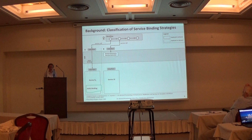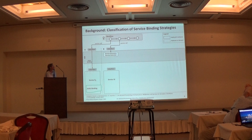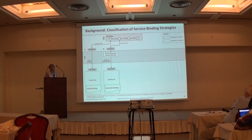The next strategy is called dynamic binding. In this strategy, and for all the following strategies, the service call only contains a description of the functional and non-functional requirements — but no specific endpoint. When receiving a service call, the ESB first has to carry out a service discovery and a service selection to find a suitable service which fulfills the functional and non-functional requirements, and then forwards the service call to the endpoint of the selected service.